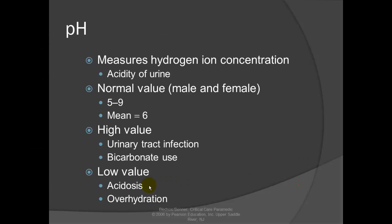Urinalysis: pH measures the hydrogen ion concentration or acidity of the urine. Normal values are 5 to 9, with a mean of about 6. A high value suggests a urinary tract infection or excessive bicarbonate use, indicating alkalosis. A low value suggests acidosis or over-hydration, meaning the urine is more acidic.